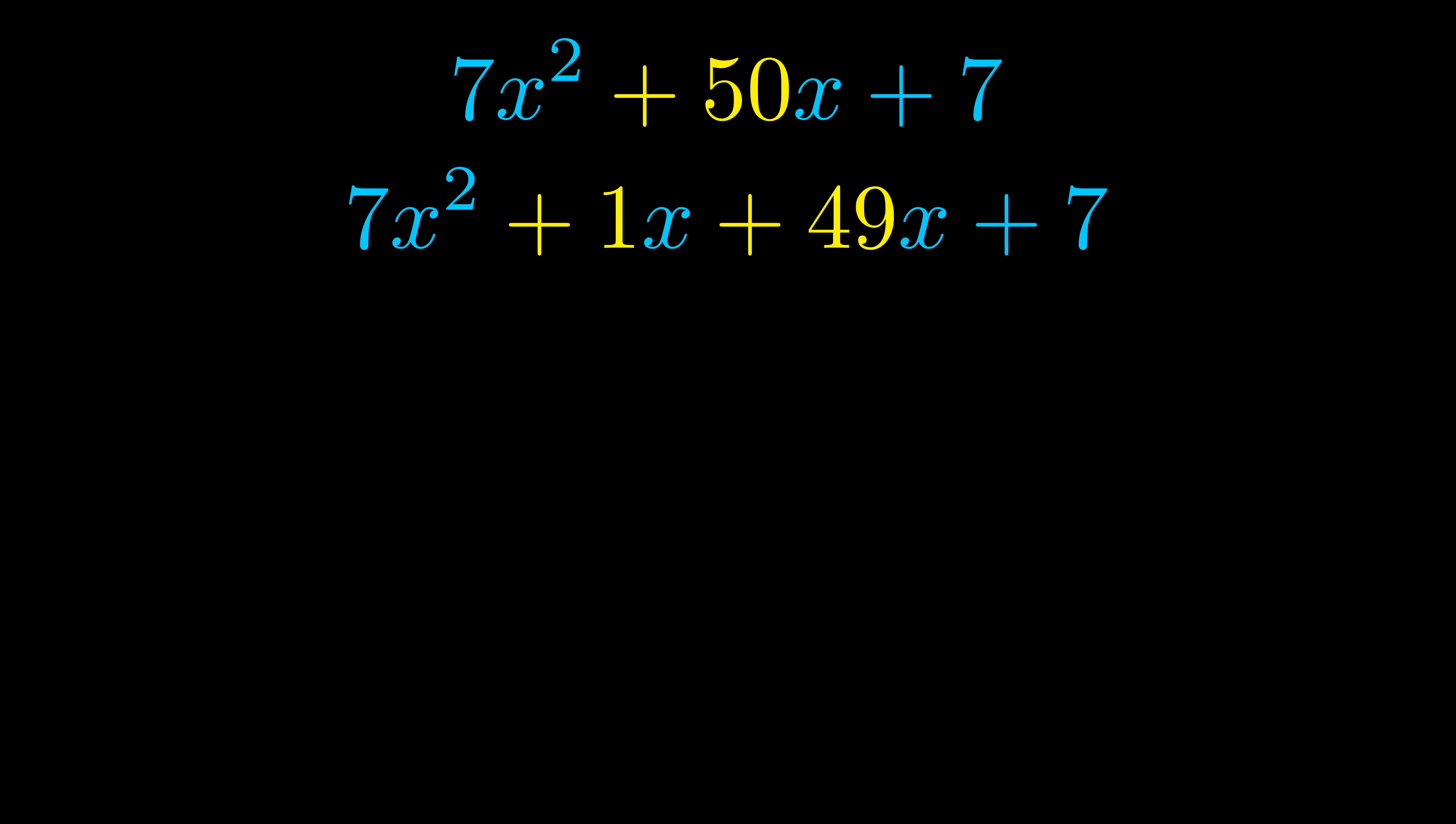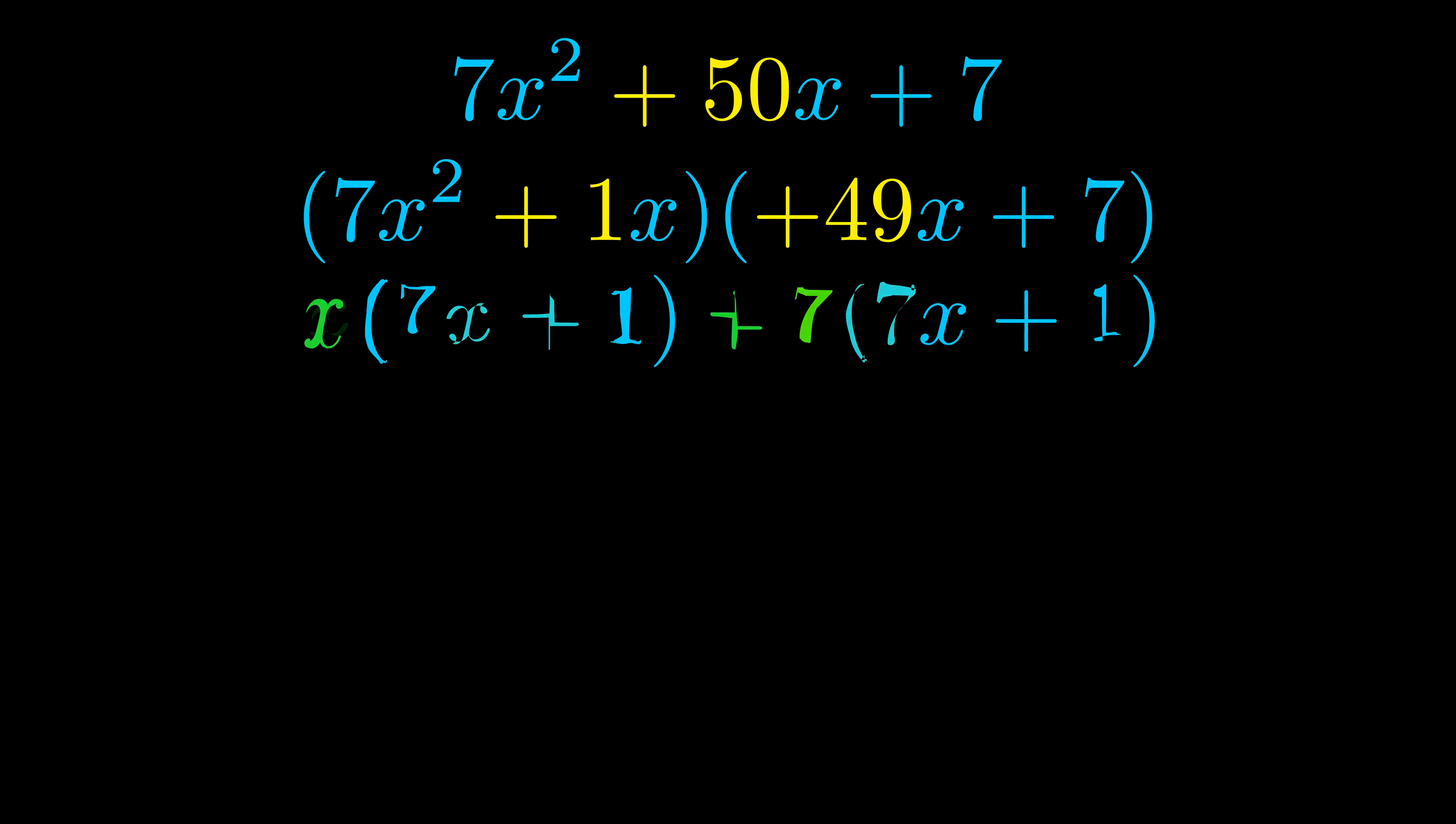Once we've done this we go ahead and put parentheses around the first term and the last term. And we do that so that we can take the greatest common factor out of both terms. We can see the greatest common factor is now outside in green.